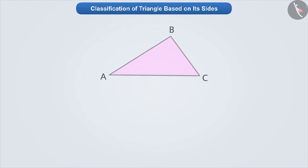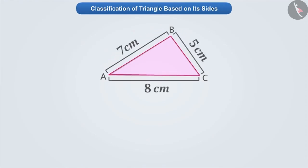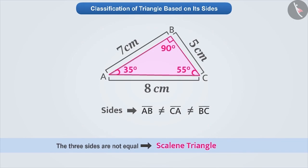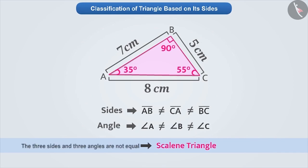Look at this triangle. If we take the measurement of its three sides, then we will know that all its three sides are not equal. Such triangles, whose sides are not equal, are called scalene triangles. If we take the measurement of its angles, then we will know that its angles are not equal. In this way, we can say that if all three sides of a triangle are not equal, then its angles are also not equal.